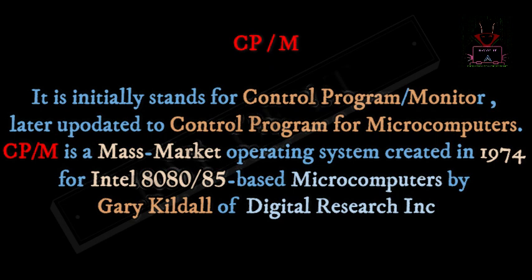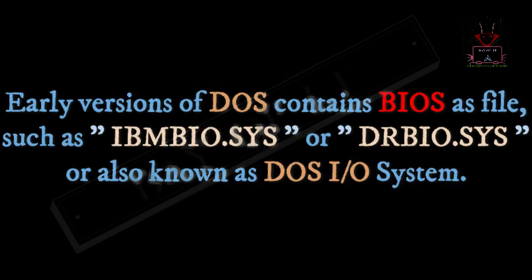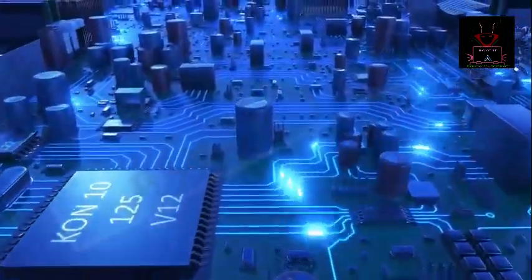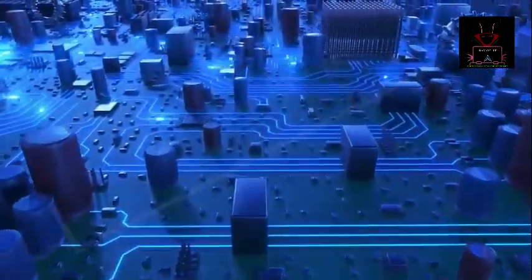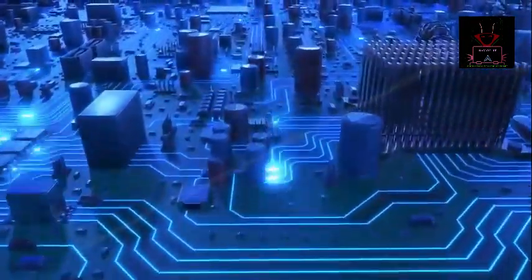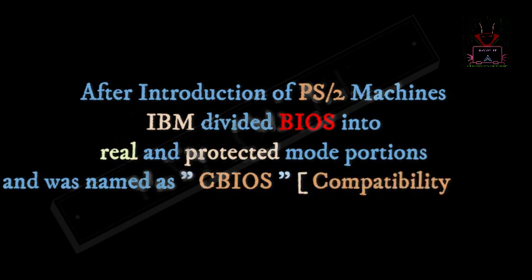Early versions of DOS systems contained BIOS as a file, such as IBMBIO.SYS or DRBIO.SYS, also called the DOS BIOS system, and contained the lower-level hardware-specific part of the operating system but were operating system independent. Later, with the introduction of PS/2 machines, IBM divided the system BIOS into real and protected mode portions, meant to provide backward compatibility with existing operating systems, and this was named CBIOS.